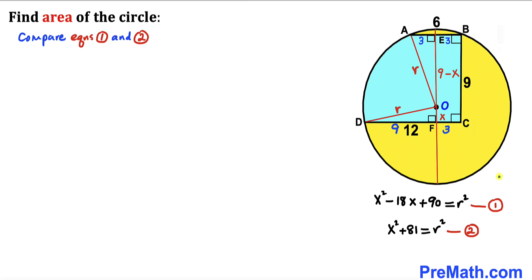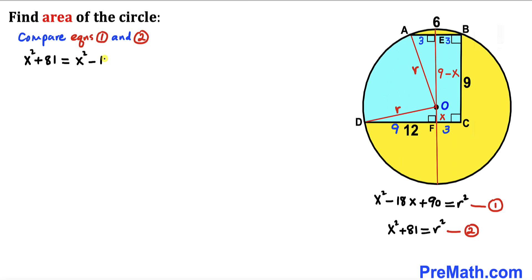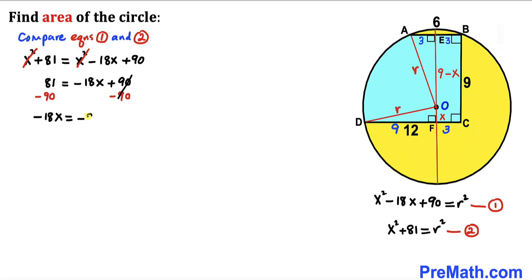Comparing Equations 1 and 2, since the right-hand sides are identical, we equate the left-hand sides: x² + 81 = x² − 18x + 90. The x² terms cancel, leaving 81 = −18x + 90. Subtracting 90 from both sides: −18x = −9. Dividing both sides by −18, x equals 1/2.